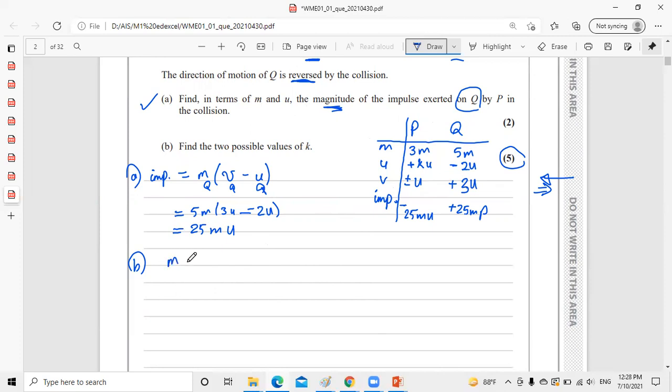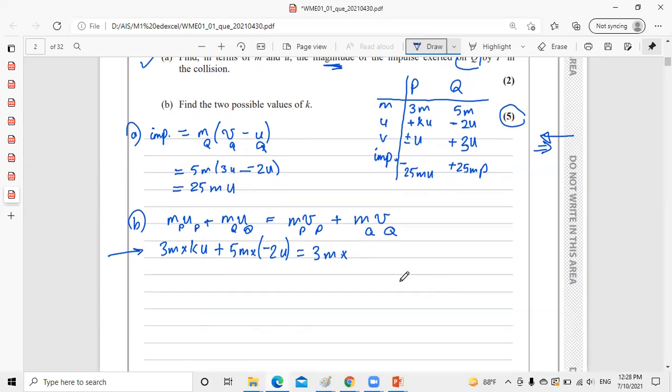Let's use conservation of momentum for both particles. M₁U₁ plus M₂U₂ for P and Q equals M₁V₁ plus M₂V₂ for P and Q. Total momentum before collision equals total momentum after collision. Let's substitute the values from the table. 3M times KU plus 5M times negative 2U equals 3M times U, and I'll put it positive first, plus 5M times 3U.